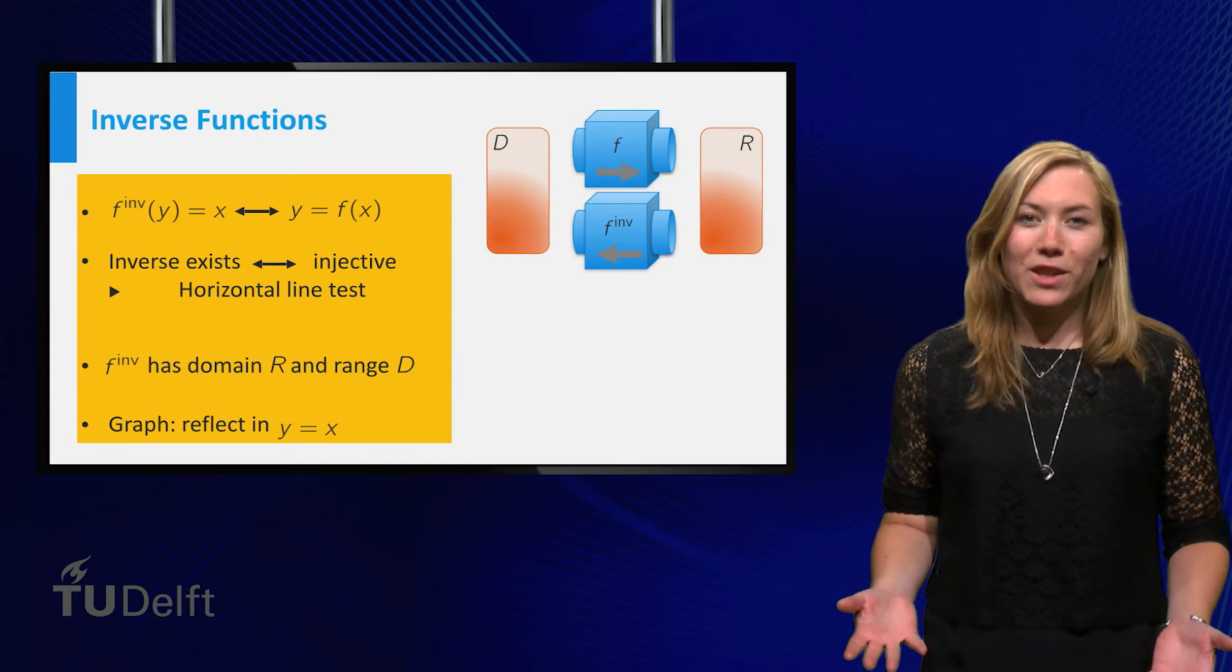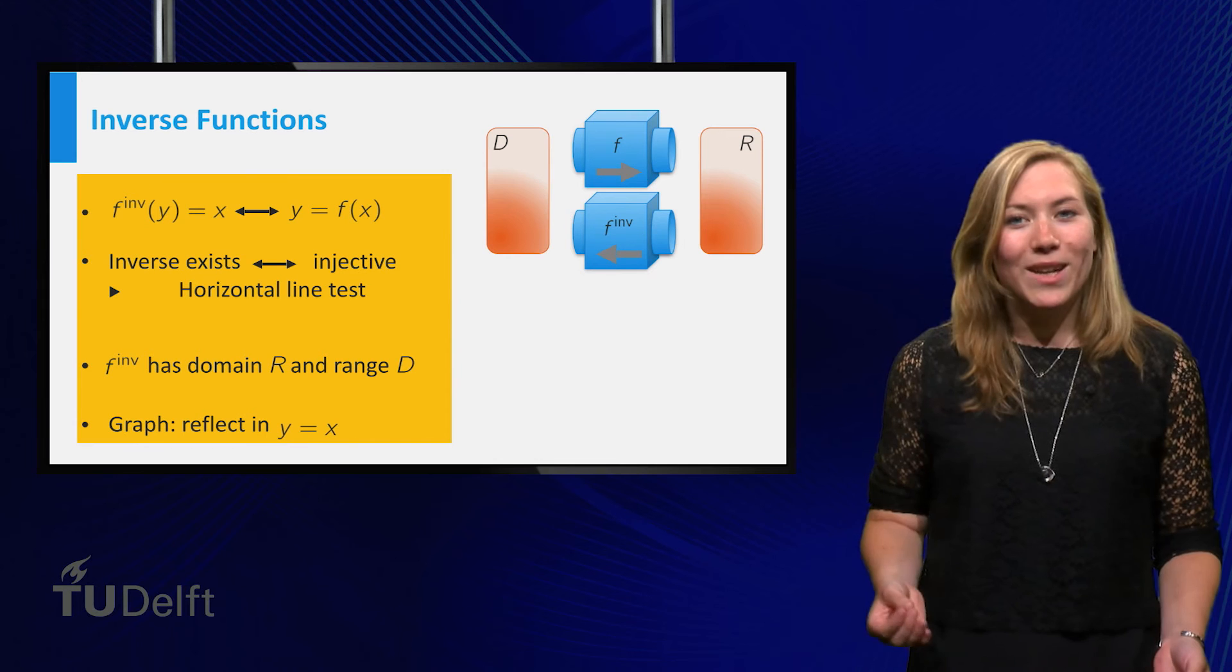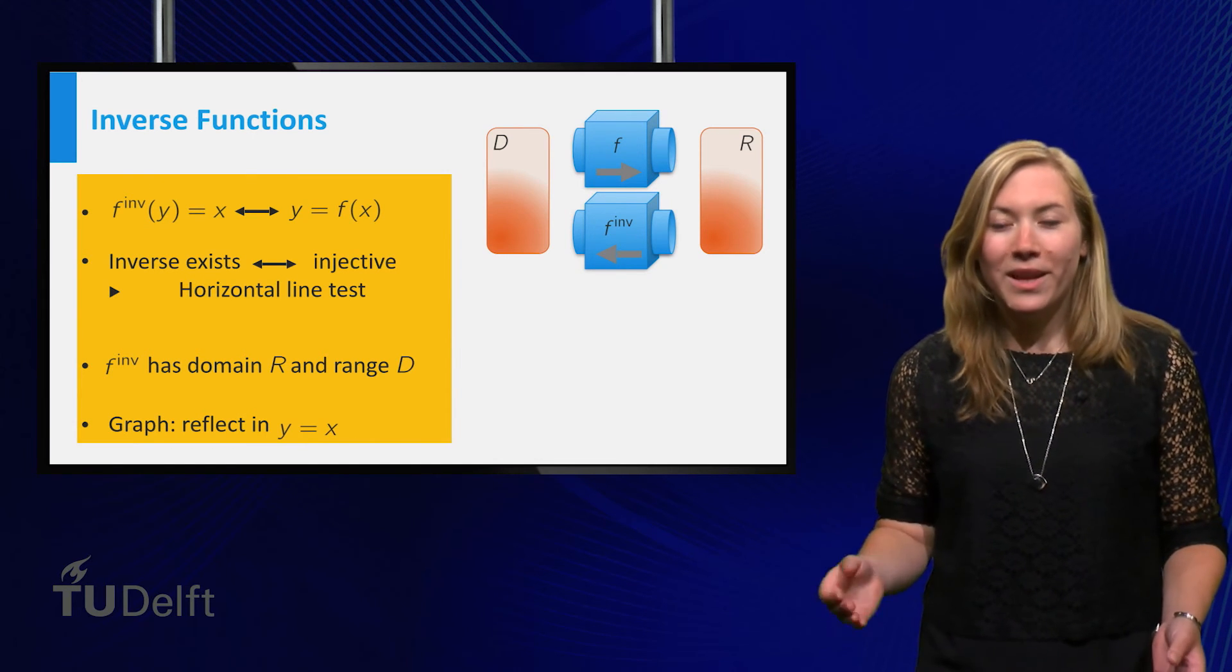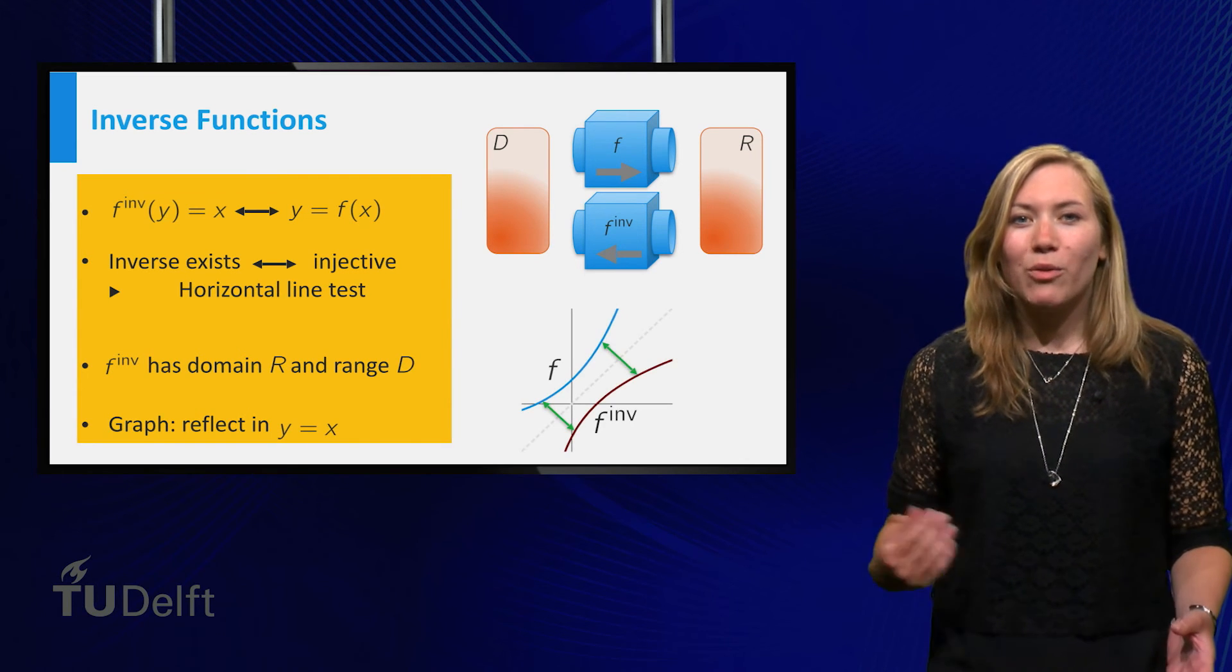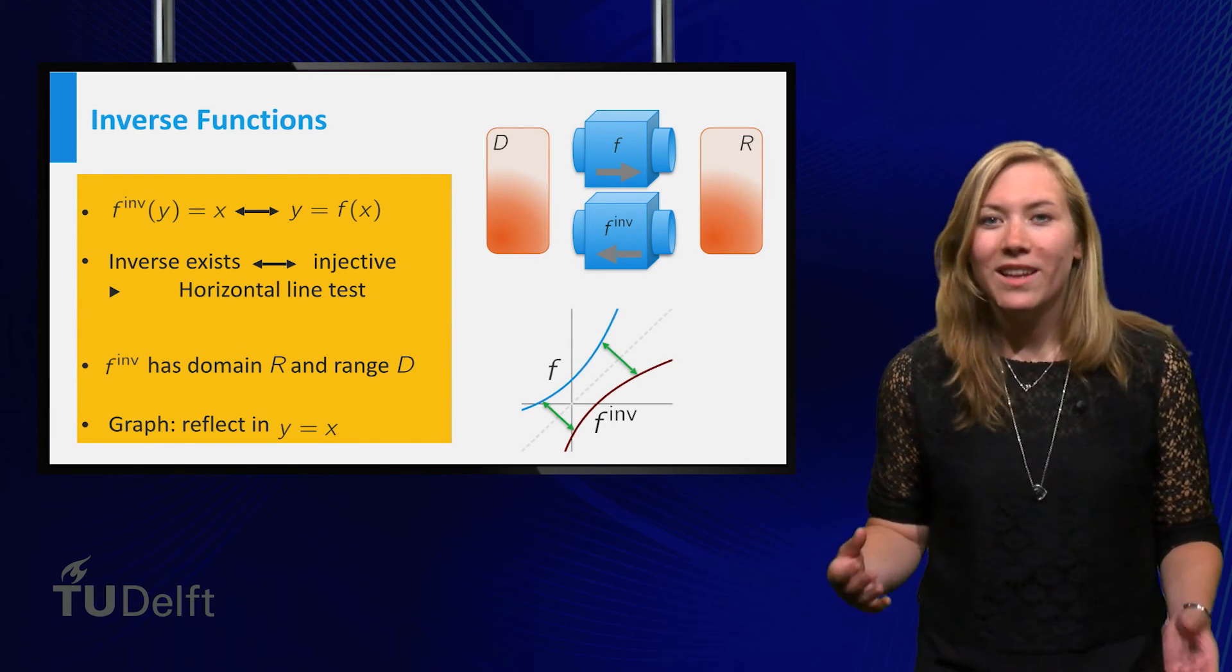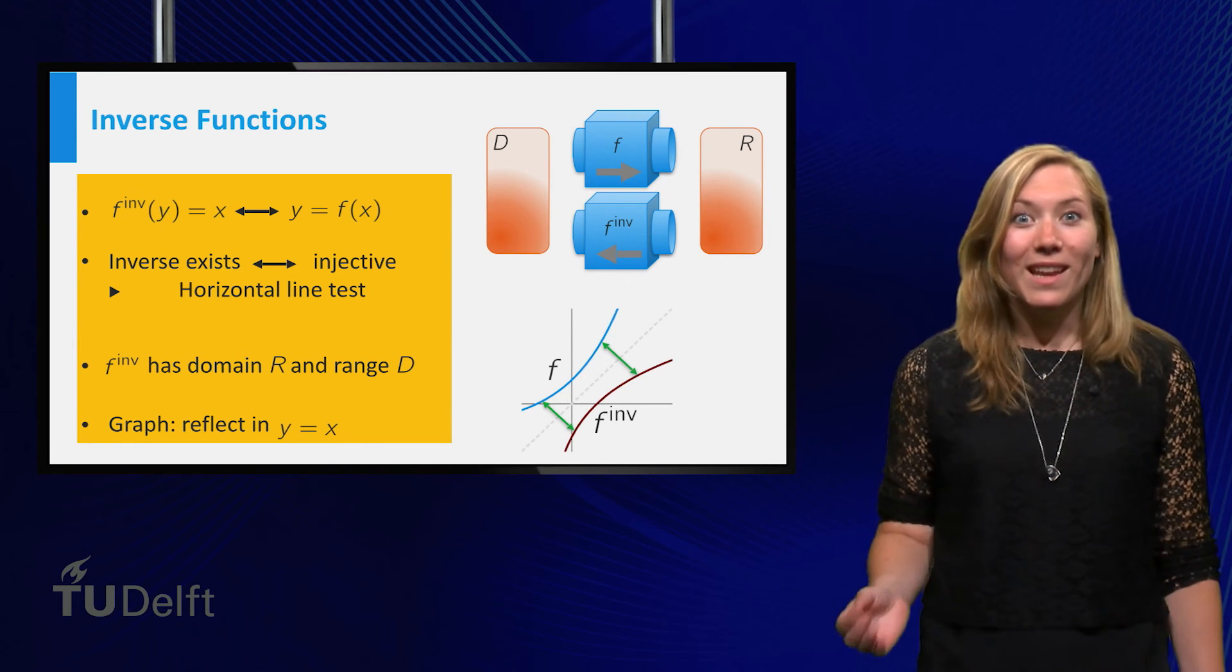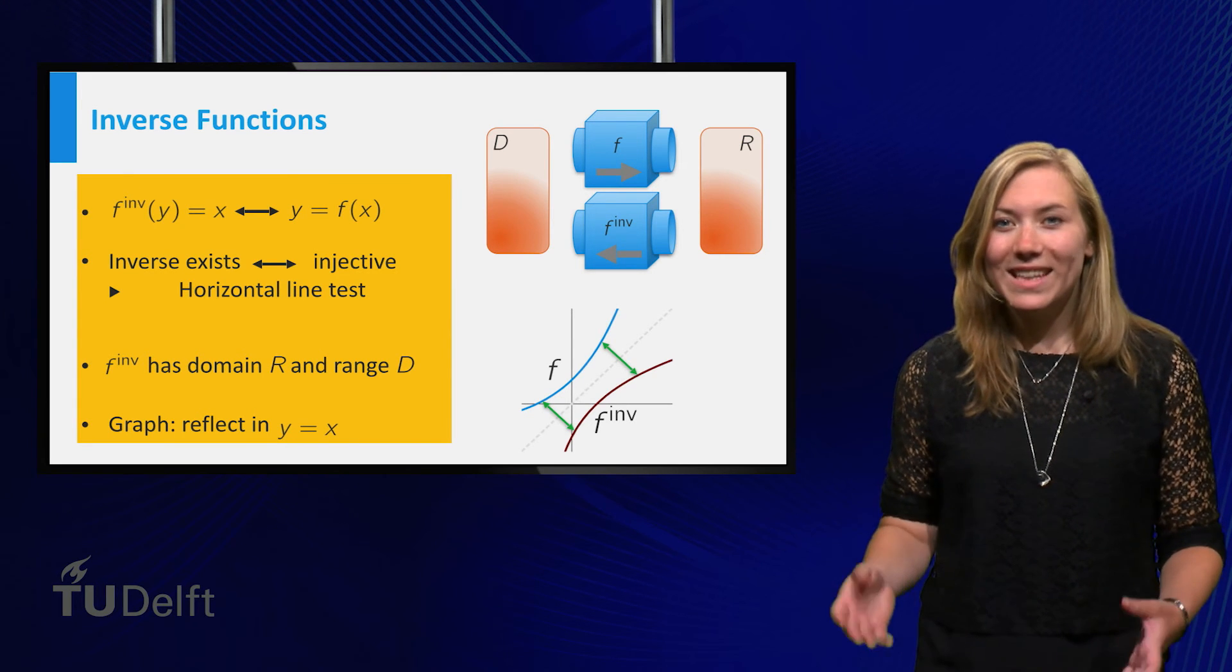As inverse functions interchange the role of input and output, the domain of an inverse function is the range of the original f, and vice versa. Moreover, the graph of an inverse function is obtained by interchanging the x and y-axis, that is, reflecting the graph of f in the line x equals y.